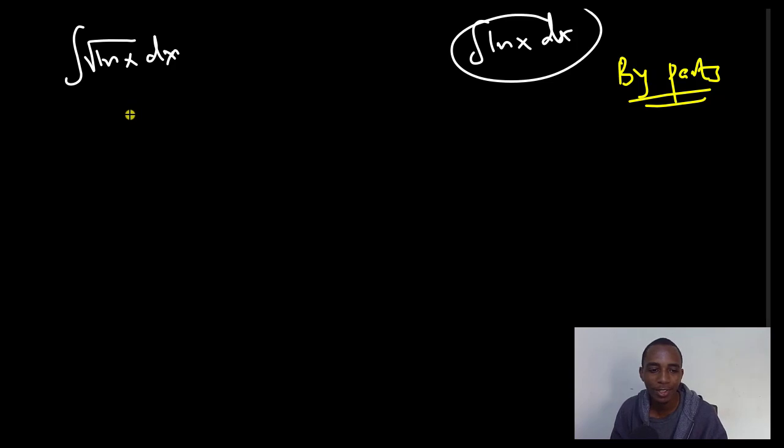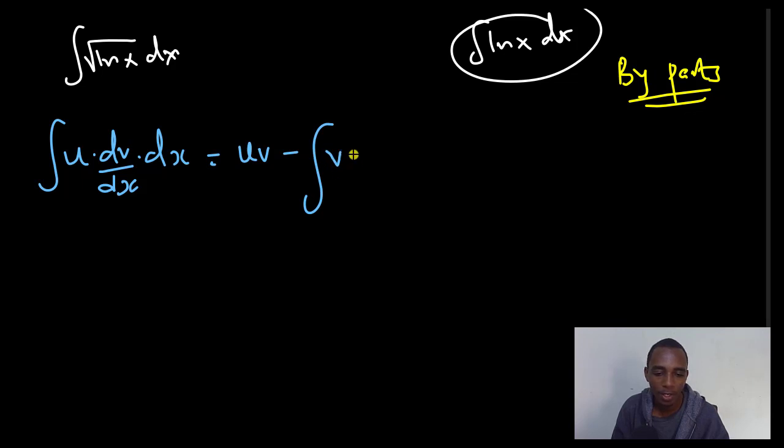We will start by trying out integration by parts. The idea of integration by parts is this: if I have a function like u times another function dv dx, and I integrate this with respect to x, this is equal to uv minus the integral of v du dx dx. Or if I have u dv dx here, then this is v du dx.